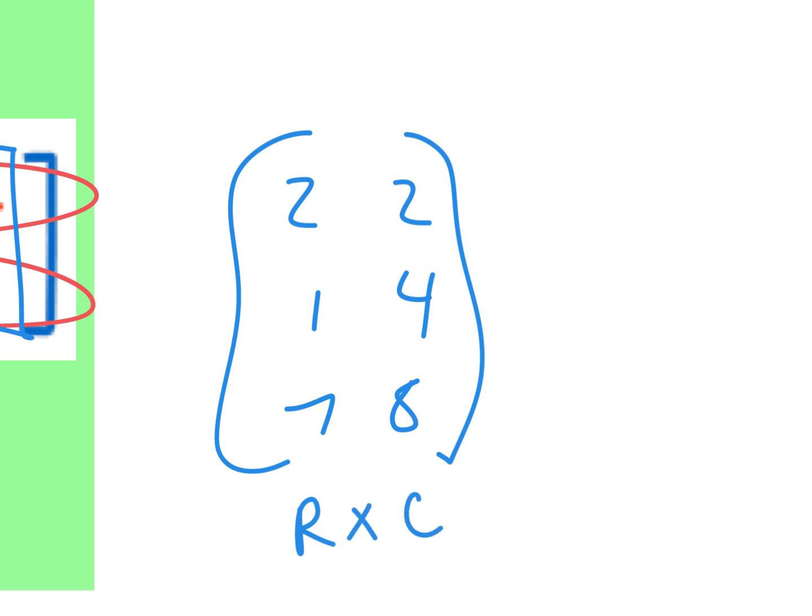What would a 3 by 2 look like? Well, that would have how many rows by how many columns? Well, how many rows does it have? One, two, three rows by two columns. That'd be a 3 by 2.